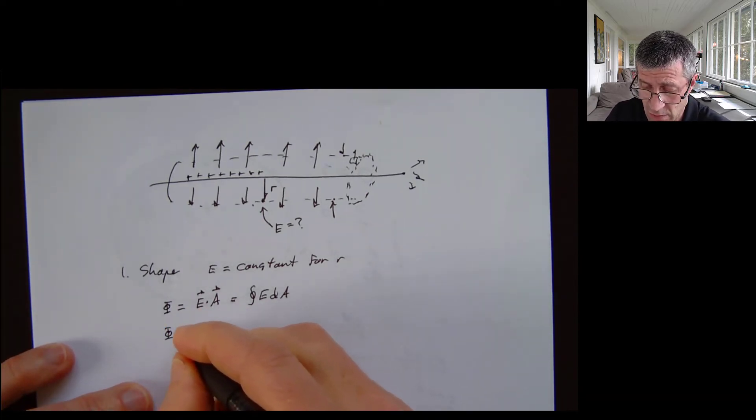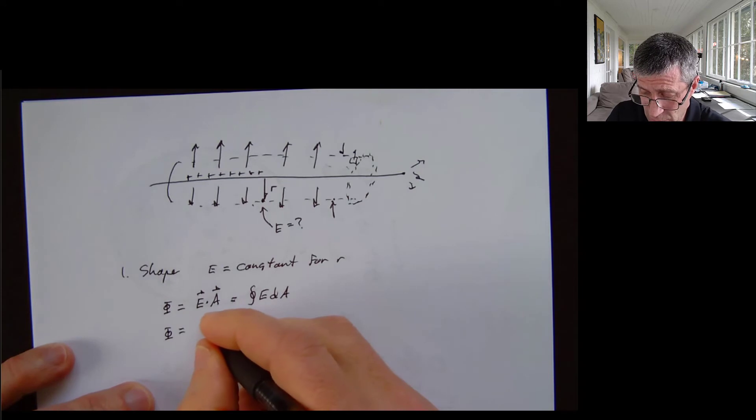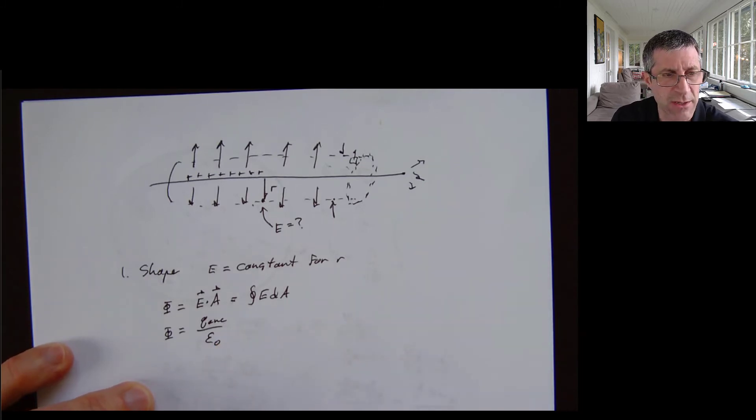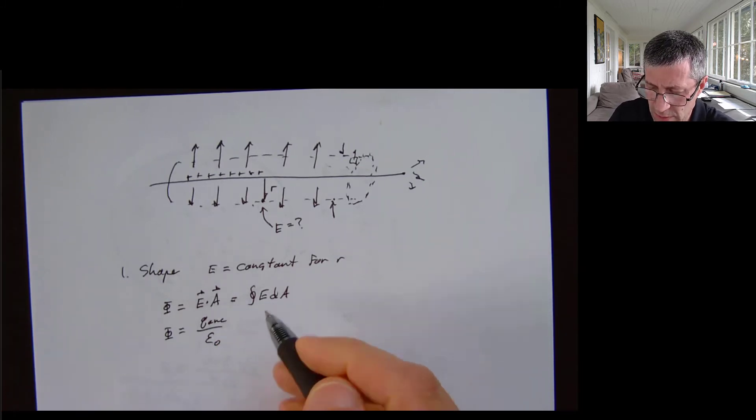The other one, and Gauss's law says, flux is equal to the enclosed charge divided by the constant epsilon naught. So I'm going to set these two equal to each other.